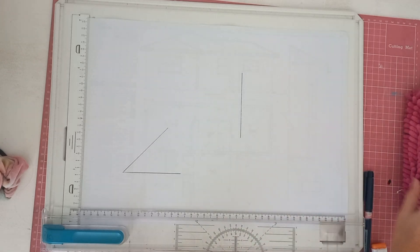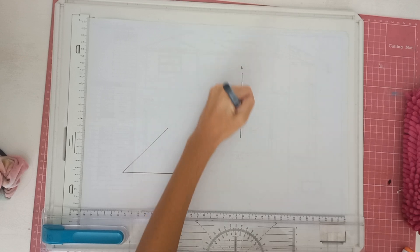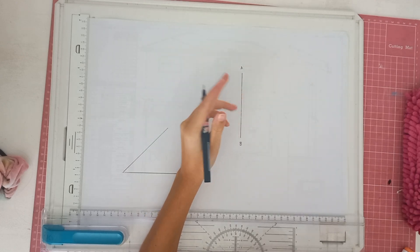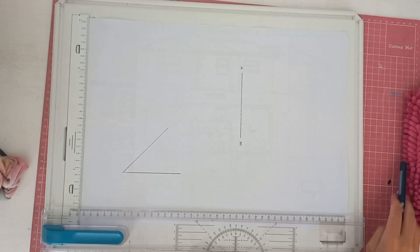We're going to start off with the line. You can see we've got the line over here. I'm actually just going to label the points to make it easier so we've got line A and line B, or line AB.